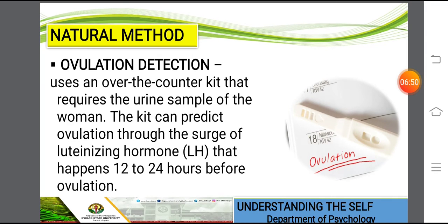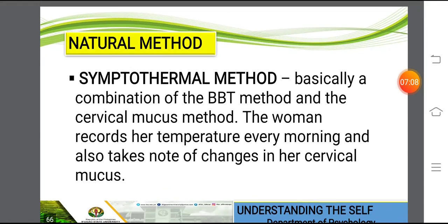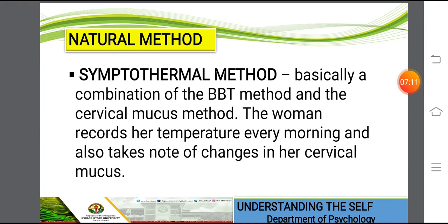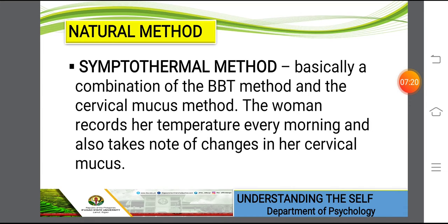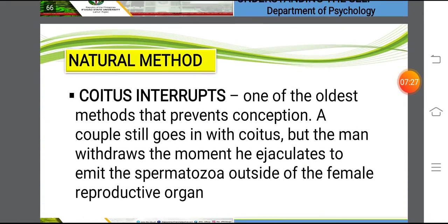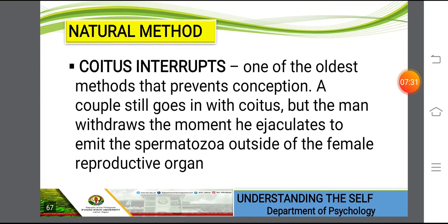Another method is ovulation detection. This uses an over-the-counter kit that requires the urine sample of the woman. The kit can predict ovulation through the surge of luteinizing hormone, or LH, that happens 12 to 24 hours before ovulation. Another is the symptothermal method, which is a combination of the BBT method and the cervical mucus method. The woman records her temperature every morning and also takes note of changes in her cervical mucus.